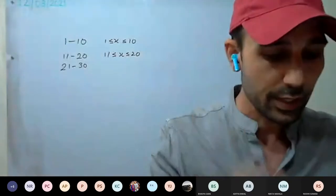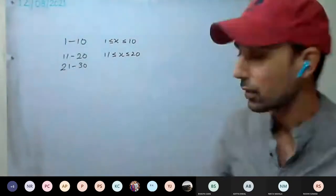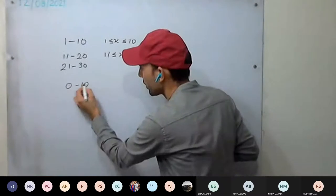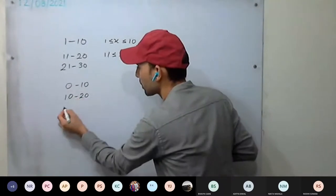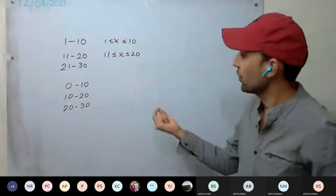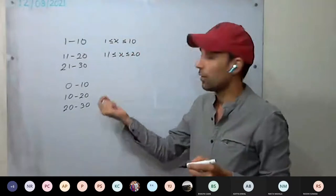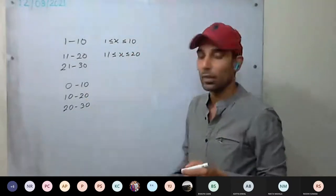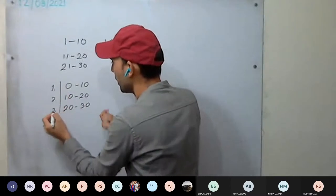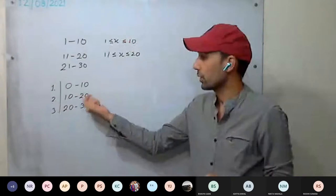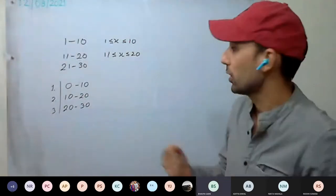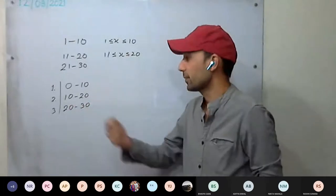But now in this question you have to take class intervals from 0 to 10, 10 to 20, 20 to 30. Now the question arises: if any student has got marks 10, where will it go — whether to the first class or the second class? It will go to the first class. Why not second? Because 10 is there.